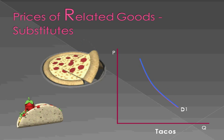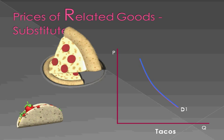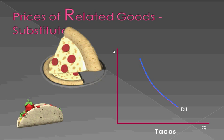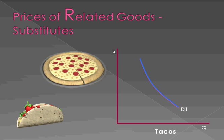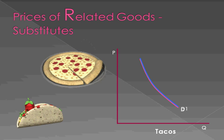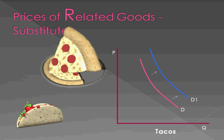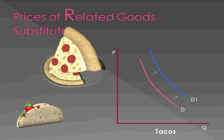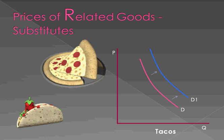Substitutes can also have an impact on demand. Let's say that the price of pizza goes up. If pizza goes up and people like tacos equally well, we'll see that they will substitute tacos for pizza. So the demand for tacos will increase, and the demand for pizza would decrease.